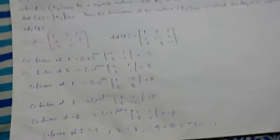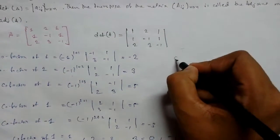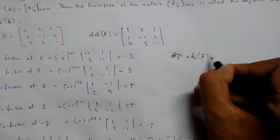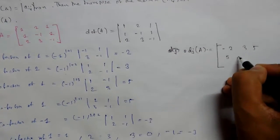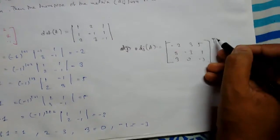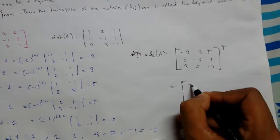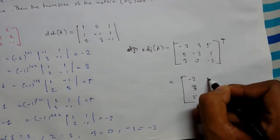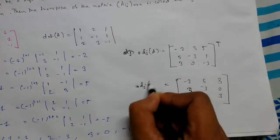Now we have found the cofactors of each element. We place them in a new matrix — the cofactor matrix of A — with values: 2, -3, 5 / 5, -3, 1 / 3, 0, -3. Then we transpose it (rows become columns and columns become rows) to get adj(A): 2, 5, 3 / -2, -3, 0 / 5, 1, -3. This is our adjugate of A.